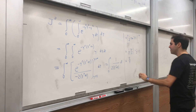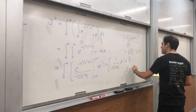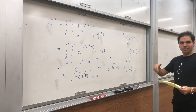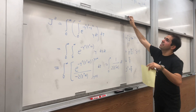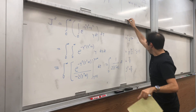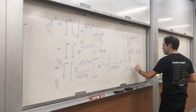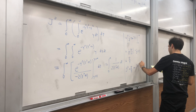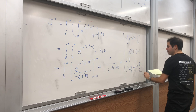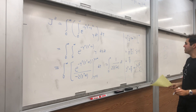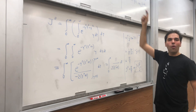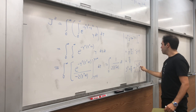Arctangent of 0 is 0, so in the end we get pi over 4. Therefore J squared equals pi over 4. Since J is an integral of a positive function, J is positive, so J equals the square root of pi over 4, which is the square root of pi over 2.